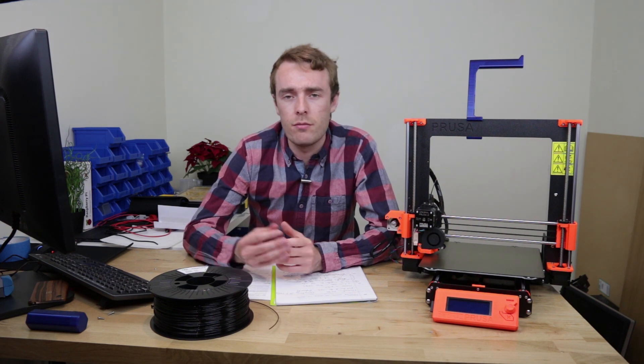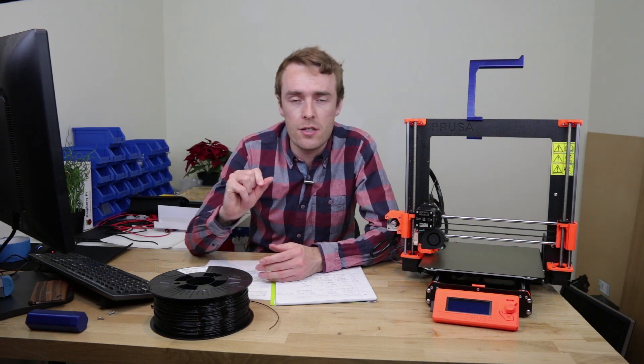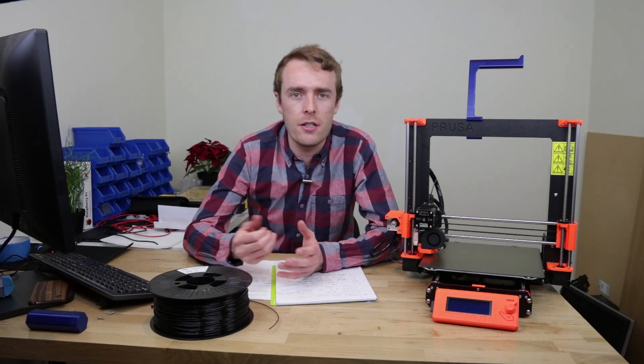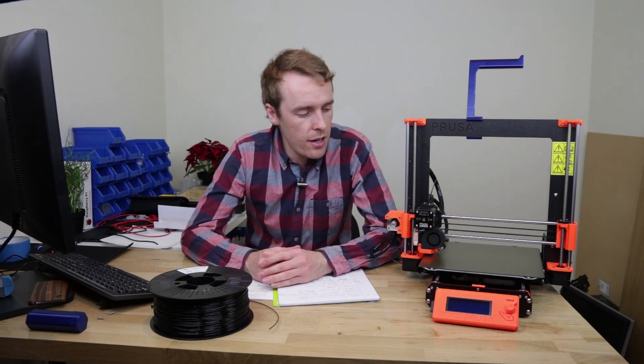If you had something like TPU, a soft rubbery filament that you could print, then you could maybe, I mean you probably wouldn't want to print the whole foot out of it, but you could print a little block that fits in that space and would make a nice rubber stop, just stop it sliding about. Unfortunately I don't have any TPU filament and while I know the Prusa Mark III is capable of it, I haven't tried it yet.